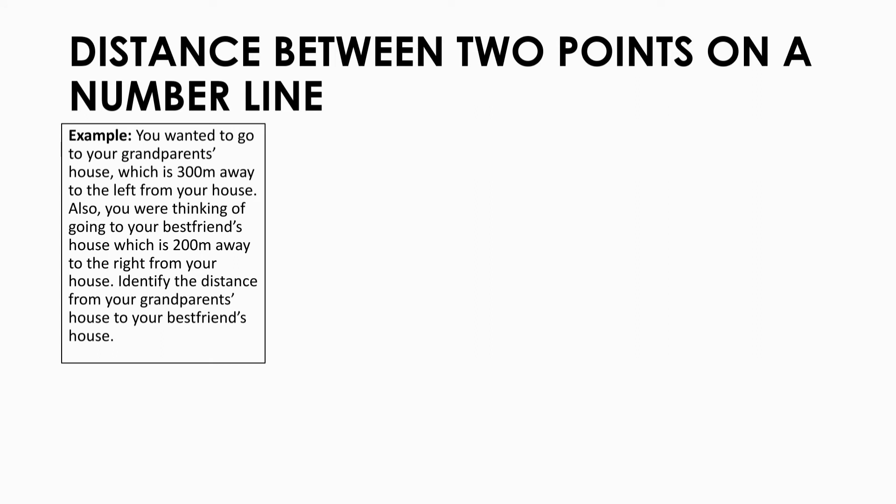It is said that your grandparents' house is located 300 meters to the left from where you're at. This means that it is expressed as negative 300. Second, your best friend's house is located 200 meters to the right from where you are. On the number line, if it's going left, it is a negative value. If it's going right, it's a positive value. Since it's going right, it's positive, so it's 200.